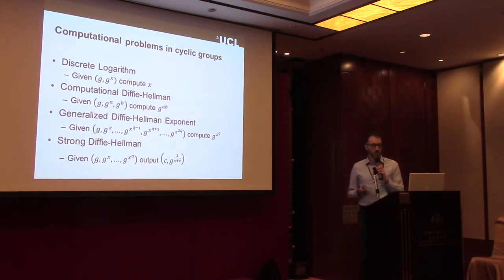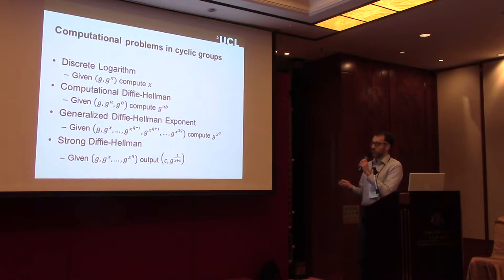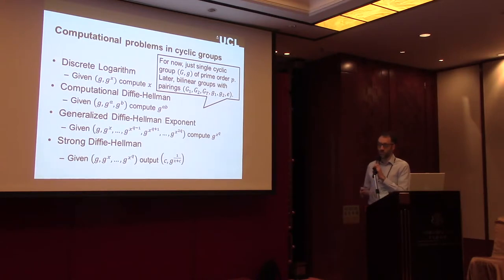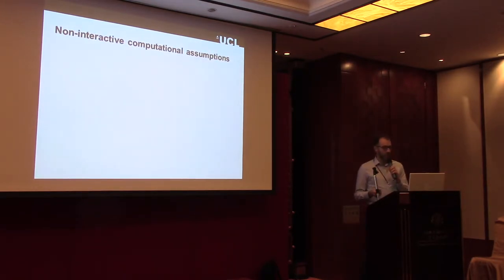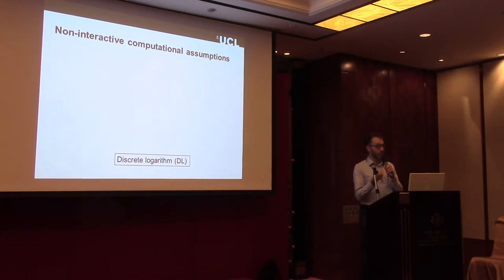We focus on computational assumptions, where there's some target group element that the adversary is trying to compute. In the computational Diffie-Hellman assumption, for instance, the adversary is given three elements and is trying to compute g to the a times b. In this talk, I'll mainly focus on the single cyclic group case, but our results also translate to bilinear groups. We also need to assume the computational Diffie-Hellman problem to be hard, since if you can solve it, you can break all assumptions we consider.